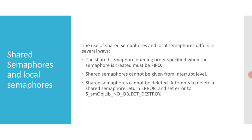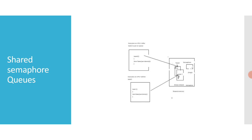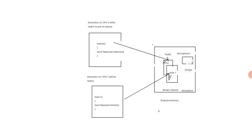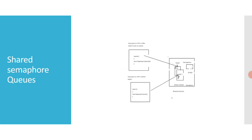Looking at this figure: it shows two tasks executing on different CPUs both trying to take the same semaphore. Task one executes first and is put at the front of the queue because the semaphore is unavailable. Task two, executing on a different CPU, tries to take the semaphore after task one's attempt and is put on the queue behind task one. This demonstrates that the shared semaphore queuing order must be first in, first out.